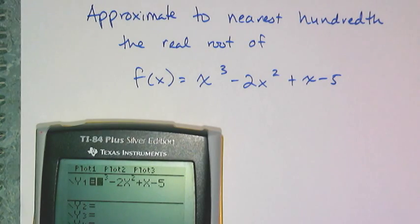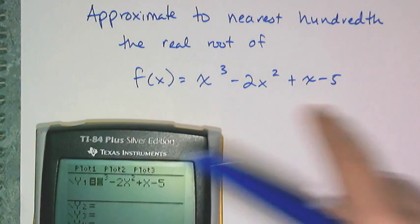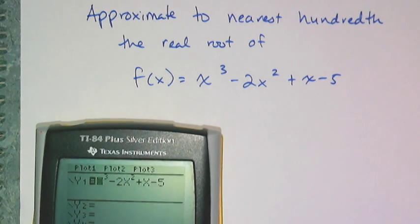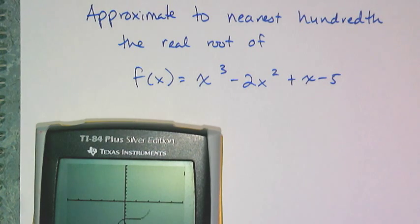So let's put together the intermediate value theorem, the changing of the intervals on the calculator, and linear interpolation to approximate to the nearest hundredth the real root of this function. So I have this function typed in, I graph it, and I can approximate between which two integers my root is. And it looks like it's between 2 and 3.